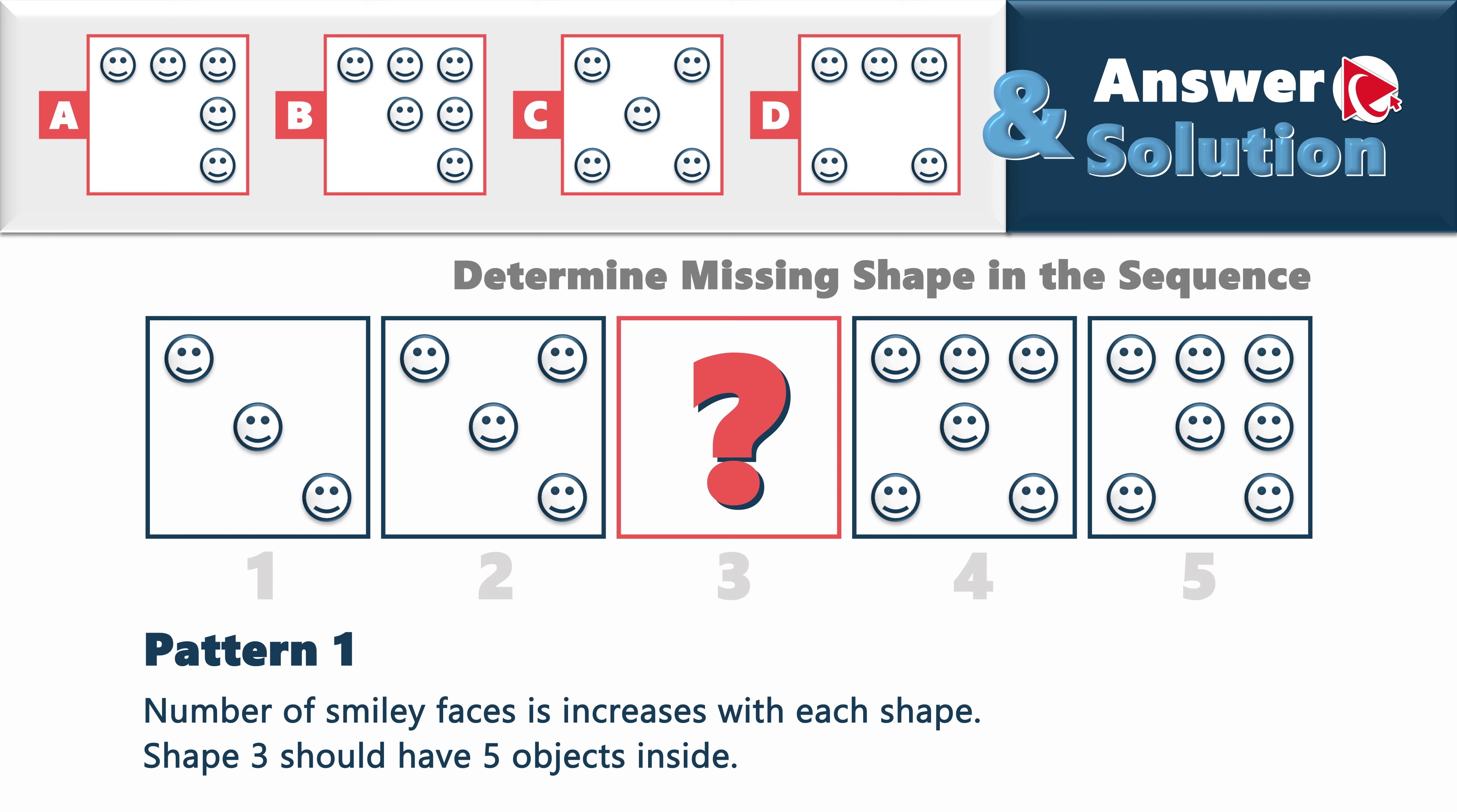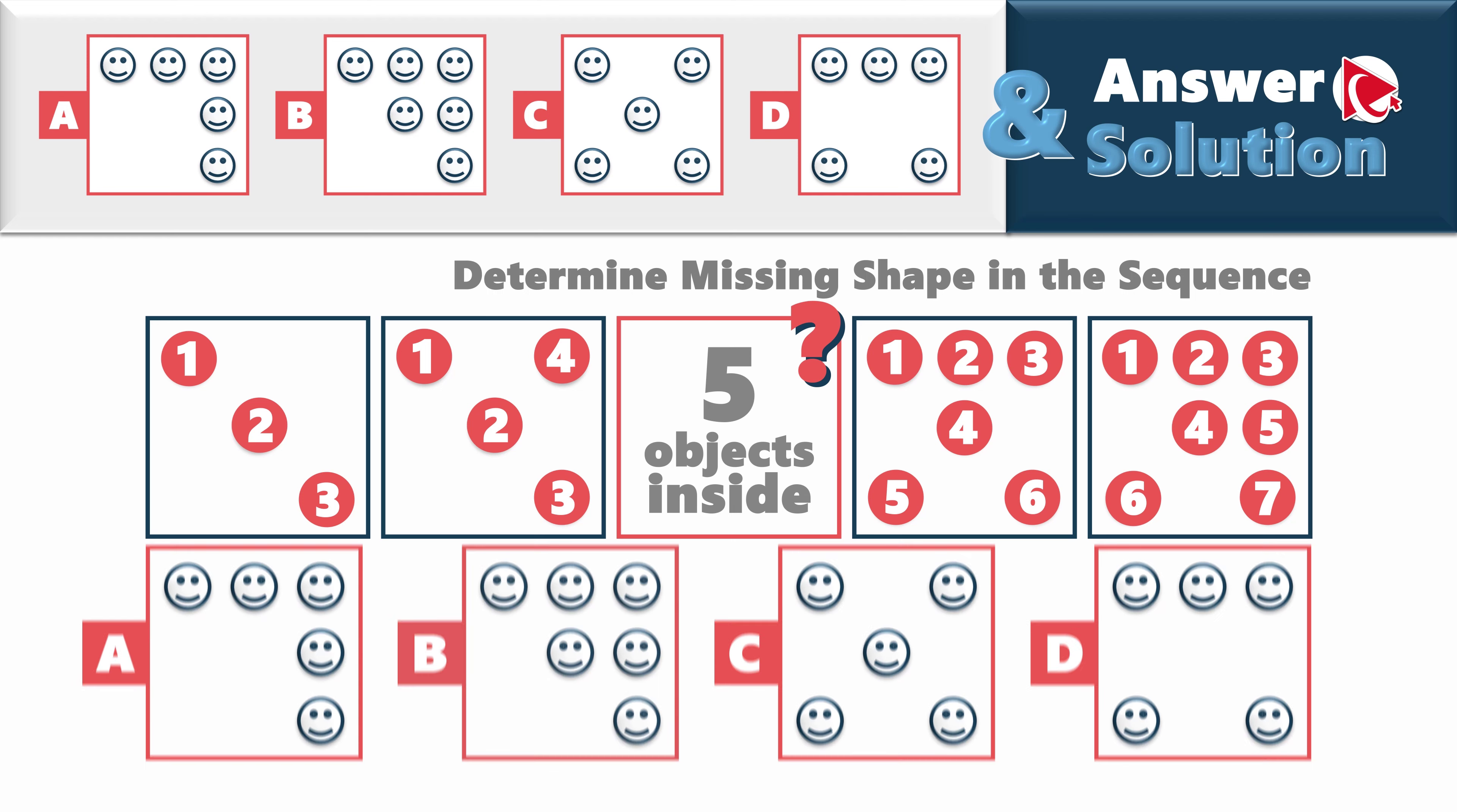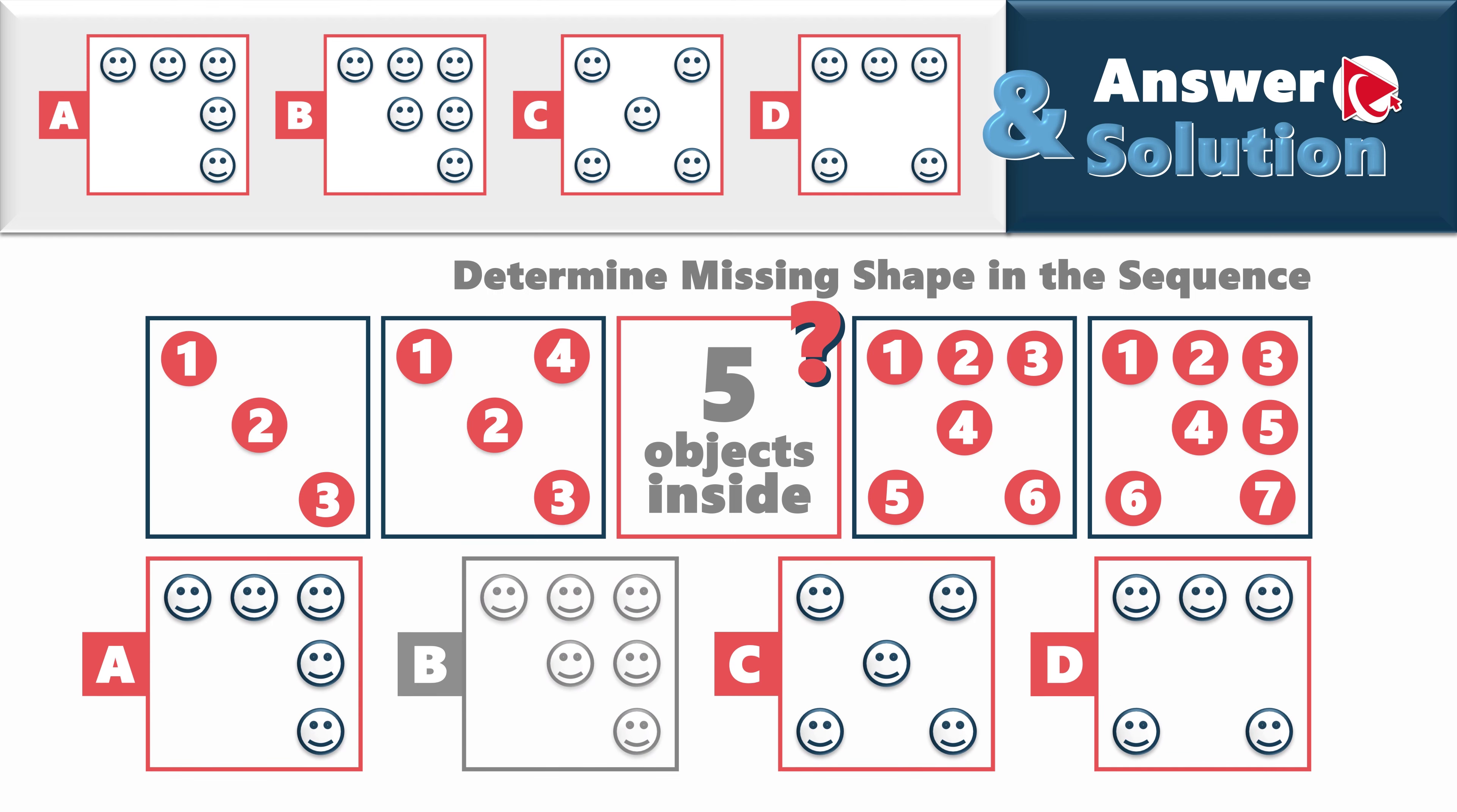So, shape 3 should have five objects inside. And the reason is, because shape 1 has 3, shape 2 has 4, then 5, 6, and 7 in shape 5. Well, it helps us a little bit, because it eliminates choice B. But we still have choices A, C, and D we need to sort through.